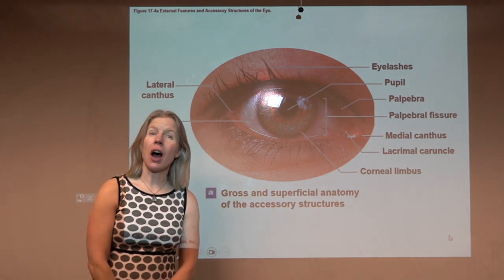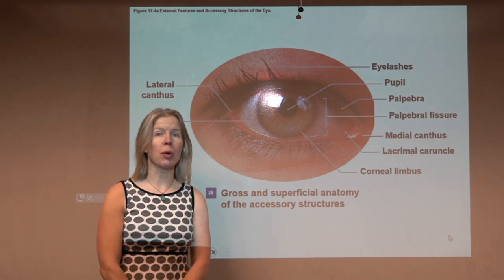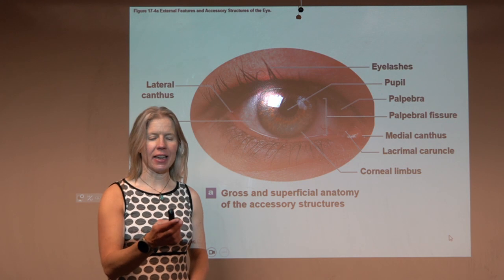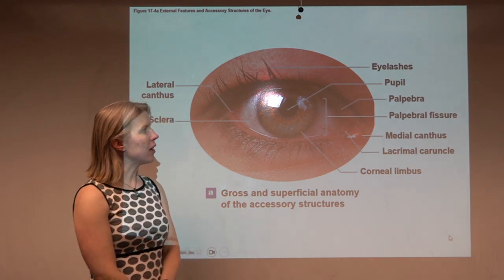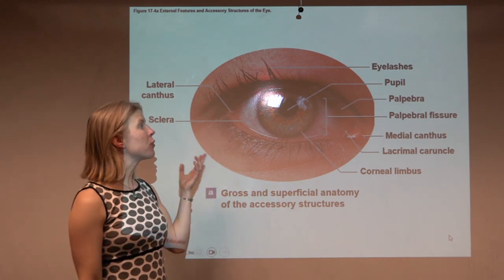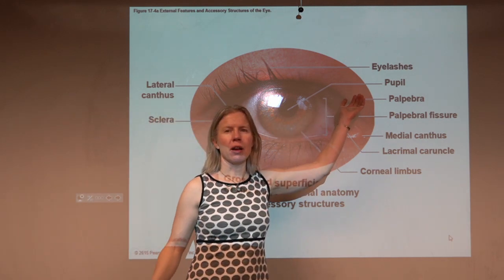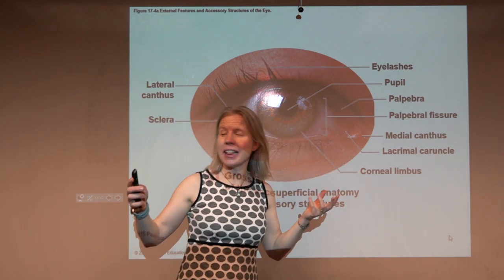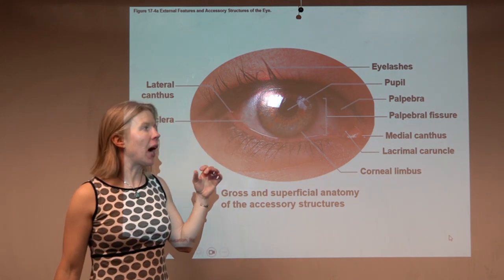Now a lot of the anatomical structures of the eye you'll be learning in lab. You will be dissecting a cow eyeball to learn that. A lot of the overall structures that we see externally you're probably pretty familiar with, so you might not call it a palpebra, you might call it an eyelid, but you know that it's there, your eyelashes protecting your eye.